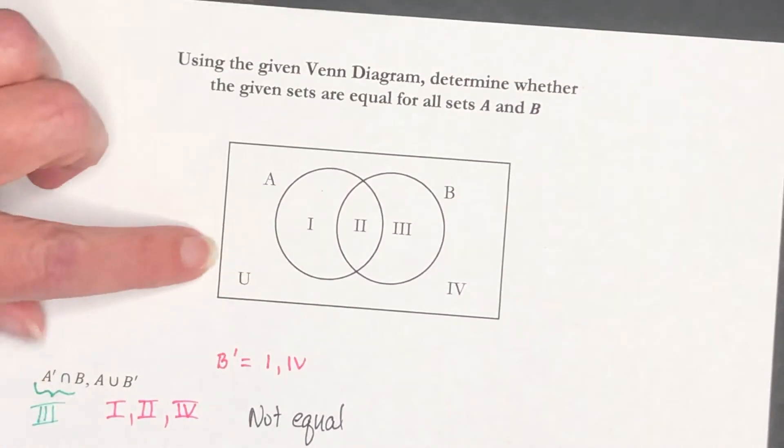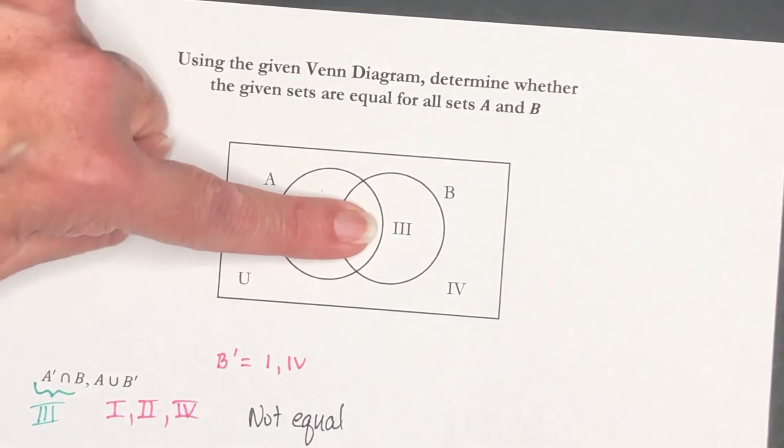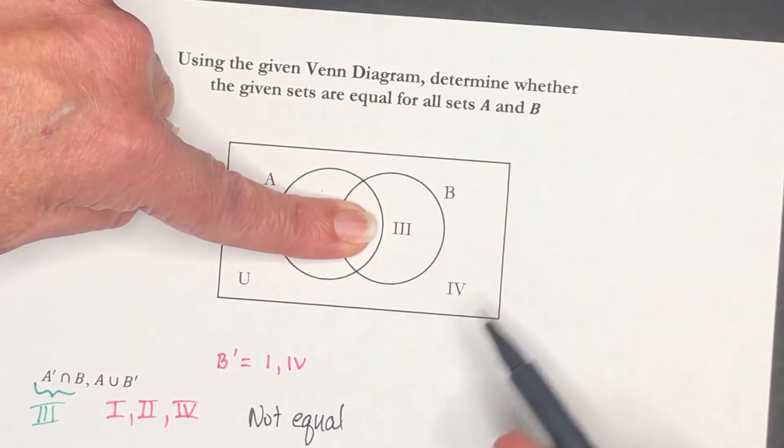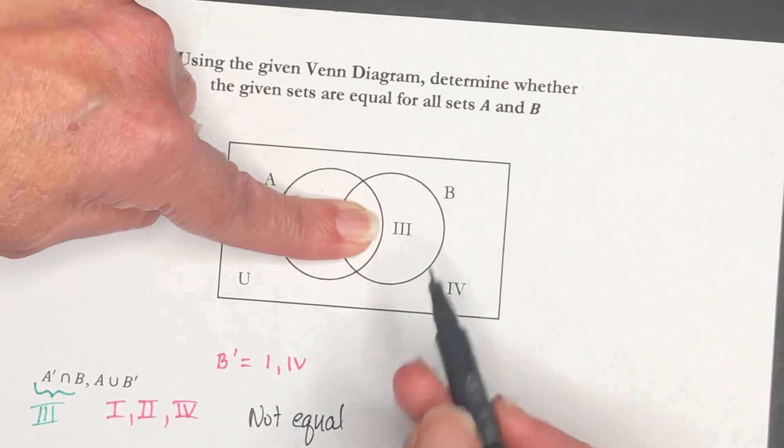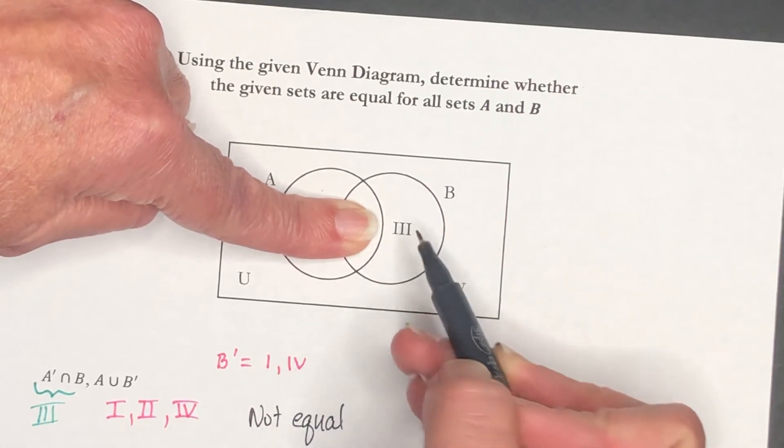So the complement of A is going to take out 1 and 2. So the complement is going to be 3 and 4. And we want to intersect that with B. So we want only what those two sets have in common. And the only thing they have in common is region 3.